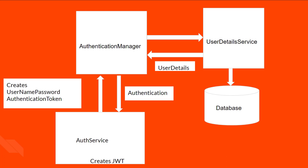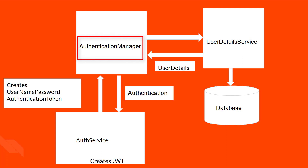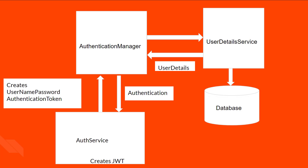These are the main components we'll use to create our authentication mechanism. First, we have our auth service, which receives the authentication request. Inside this auth service, we grab the username and password and create a UsernamePasswordAuthenticationToken. We pass this to an AuthenticationManager, which handles authenticating our users. The AuthenticationManager uses an interface called UserDetailsService, which can fetch user details from multiple sources — in our case, the database. If credentials are incorrect, we get an exception. If correct, the user details are passed to the AuthenticationManager, which returns an Authentication object back to the auth service. At that point authentication is successful, so we create a JWT and send it back to the user.